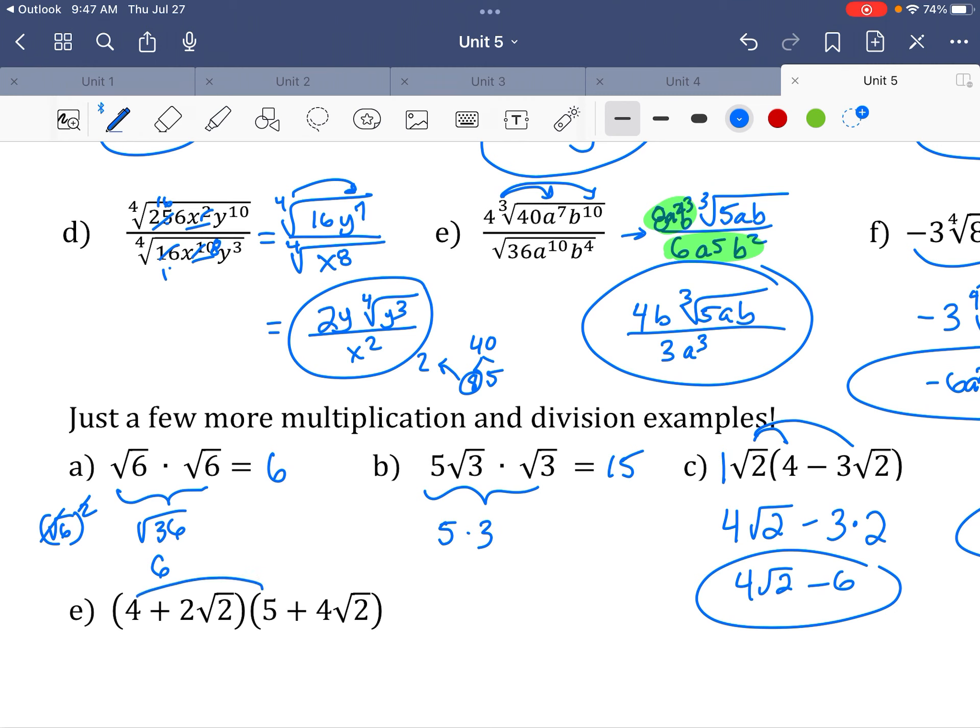So this one, hopefully this reminds you of FOIL like we did with binomials before. So I'm going to do 4 times 5, 20. 4 times here makes 16 radical 2. Here, this 2 times 5 makes 10 with a radical 2. And then here, I get 2 times 4, which is 8 in front. And the radical 2 times radical 2 pops out a 2. So it multiplies by 2. So clean this up. I got 20 plus these come together. That's 26 radical 2s. And on the end is 16. So my final answer is 36 plus 26 radical 2.